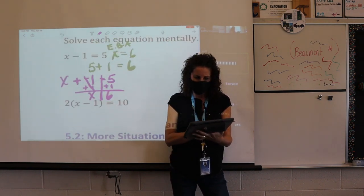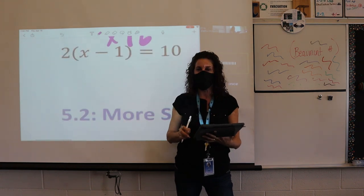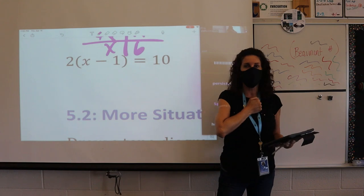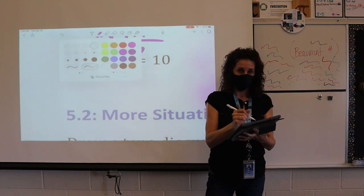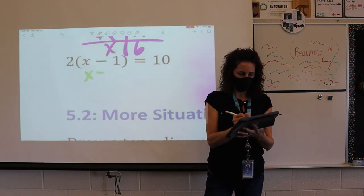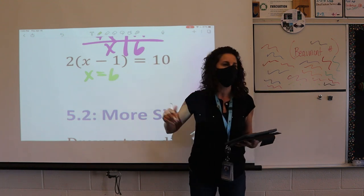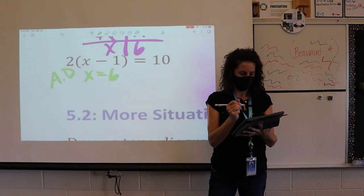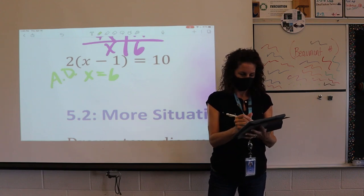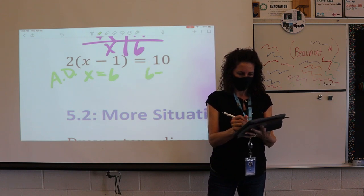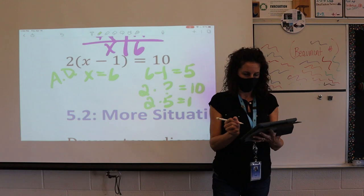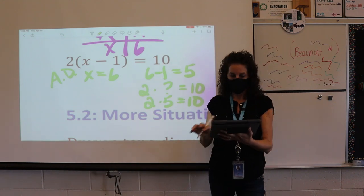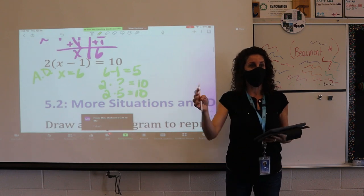All right, let's look at this one. 2 times the quantity x minus 1 equals 10. Start with fist to chest. What would this solution to x be, and how did you get it? x is 6. That's the solution that would make that equation true, and how did you get that, Anna? I first started looking for something that would equal 10, because the 2 is there. And if we do 6 minus 1, that equals 5, and then 2 times 5 is 10. Excellent.